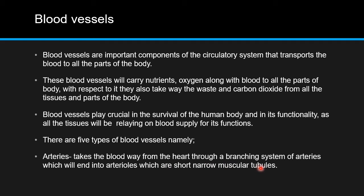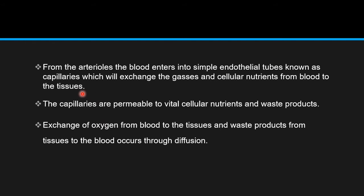Arteries take blood away from the heart through a branching system which ends into arterioles — short, narrow, muscular tubules. Arteries help in the flow of blood from the heart through branching systems that end into arterioles. From the arterioles, blood enters into simple endothelial tubes known as capillaries, which exchange gases and cellular nutrients from blood to the tissues. Arterioles are small narrow muscular tubules that help blood flow from arteries to capillaries, playing a major bridging role between the two.